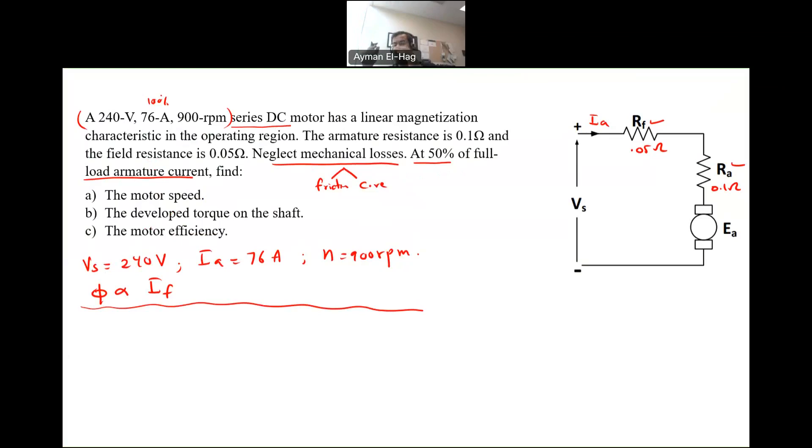Whenever you are given the speed at a certain condition and you want to find the speed at another condition, it's always based on the acceleration, Ea, which is proportional to N times If.